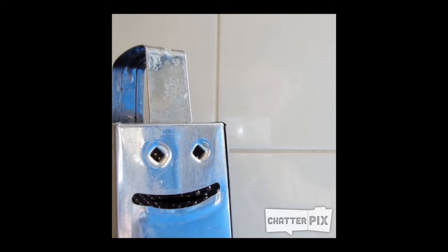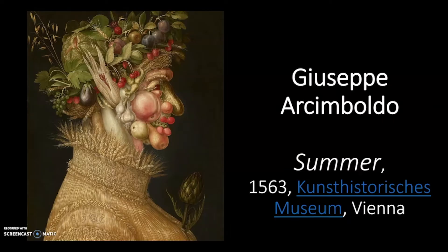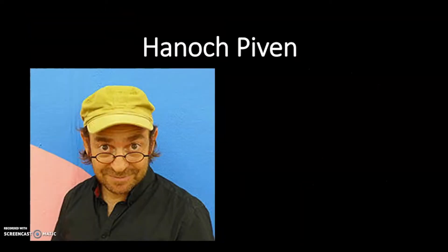I tend to see faces everywhere. What do you see when you look at this picture? Do you see fruit? Do you see vegetables? Do you see leaves? Are you able to see a face — the profile or side view of a person's face? That's what this artist, Giuseppe Arcimboldo, is famous for. He's an Italian artist from the late 1500s, famous for taking fruits, vegetables, and other random items and combining them together to make the form of a face. This is a much more recent artist.